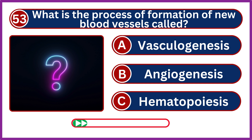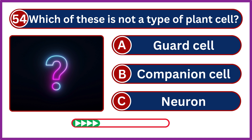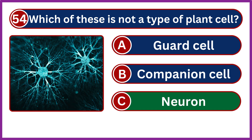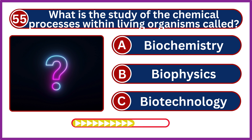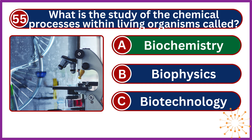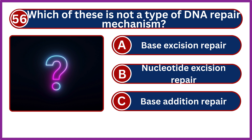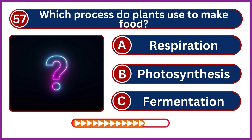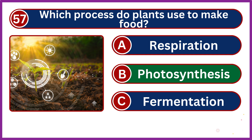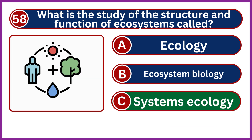What is the process of formation of new blood vessels called? Angiogenesis. Which of these is not a type of plant cell? Neuron. What is the study of the chemical processes within living organisms called? Biochemistry. Which of these is not a type of DNA repair mechanism? Base addition repair. Which process do plants use to make food? Photosynthesis. What is the study of the structure and function of ecosystems called? Systems ecology.